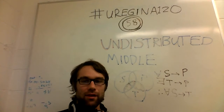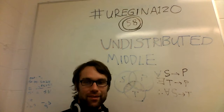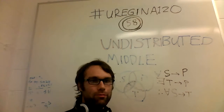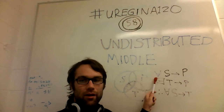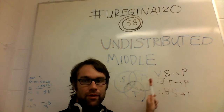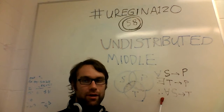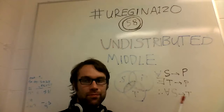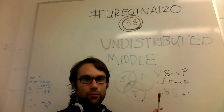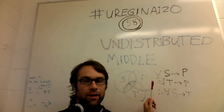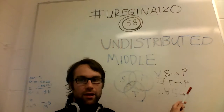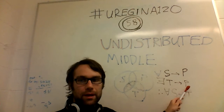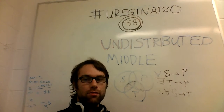The undistributed middle is a technical term. Really, all we mean is an argument of the form: all S's are P's, some T's are P's, therefore all S's are T's. This conclusion does not actually follow from the two premises. When we say 'middle' in this context, we mean this second term, P.